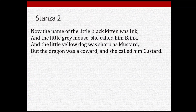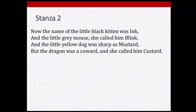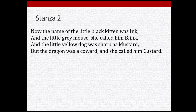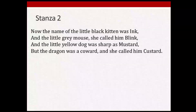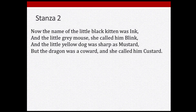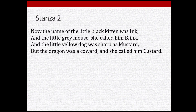In the second stanza, the characters are introduced. 'Now the name of the little black kitten was Ink, and the little grey mouse she called him Blink, and the little yellow dog was sharp as mustard, but the dragon was a coward and she called him Custard.' The black kitten is named Ink, the grey mouse is called Blink, the yellow dog is called Mustard, and the dragon — who is described as a coward — is named Custard.